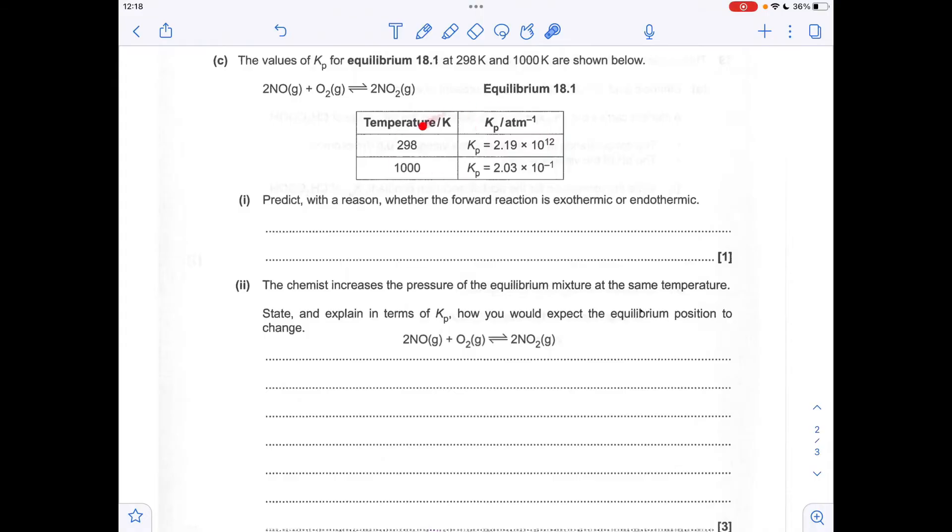Moving on to part C now, we've got to use the data in the table to decide whether the forward reaction is exothermic or endothermic. So you can see at the higher temperature, the Kp value has decreased.